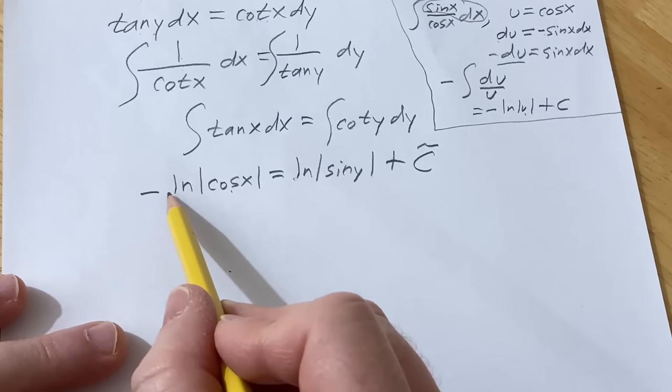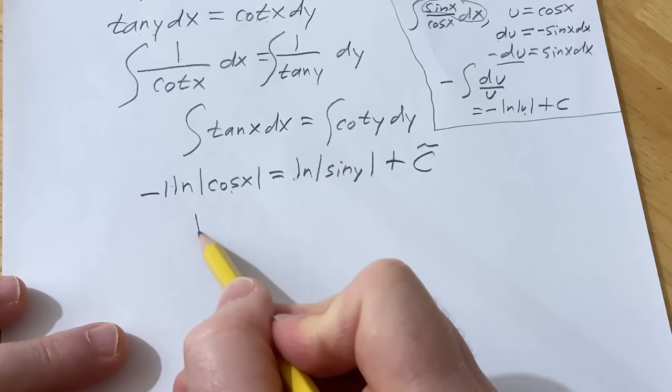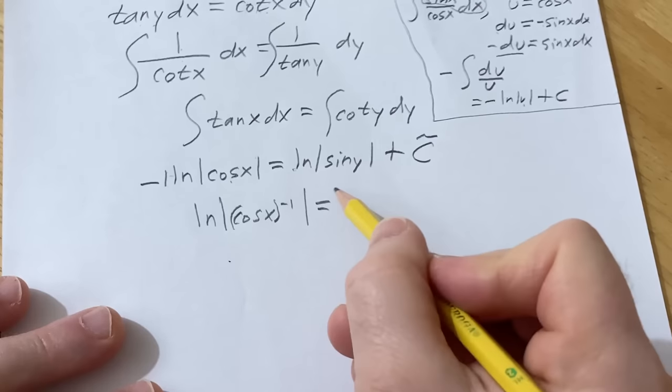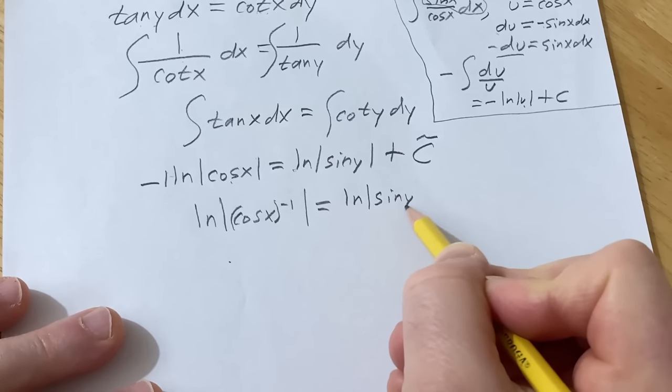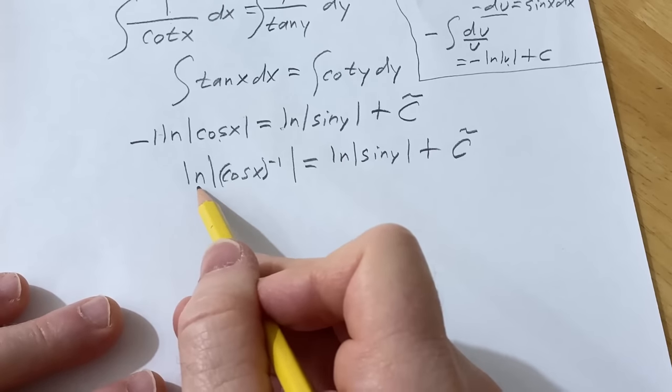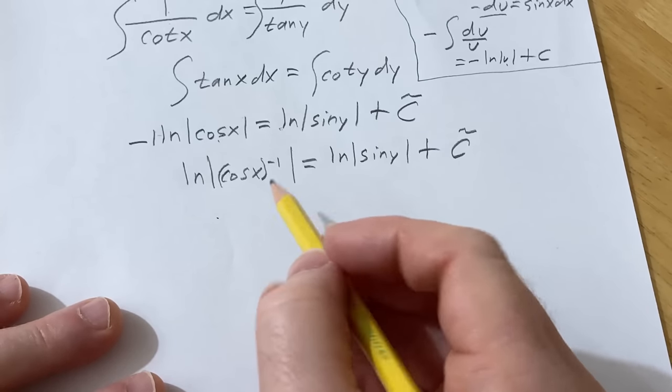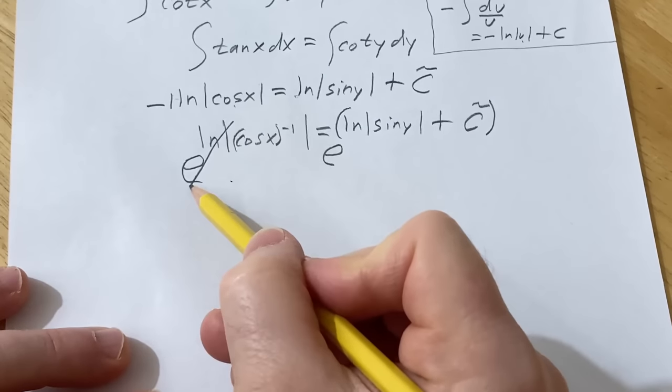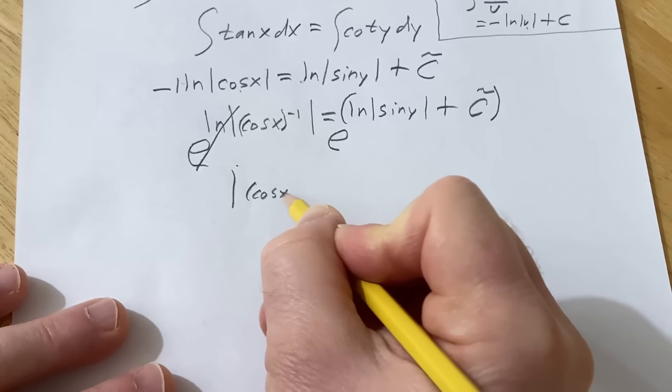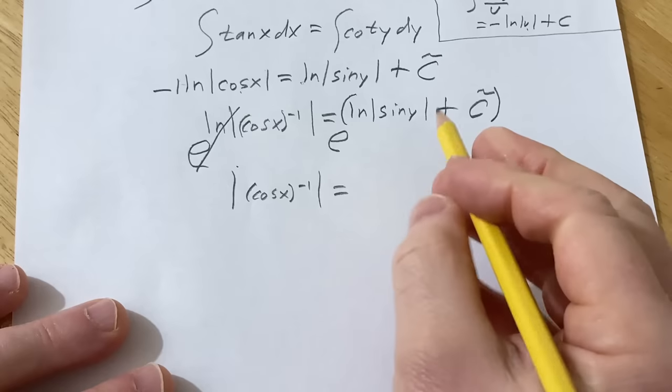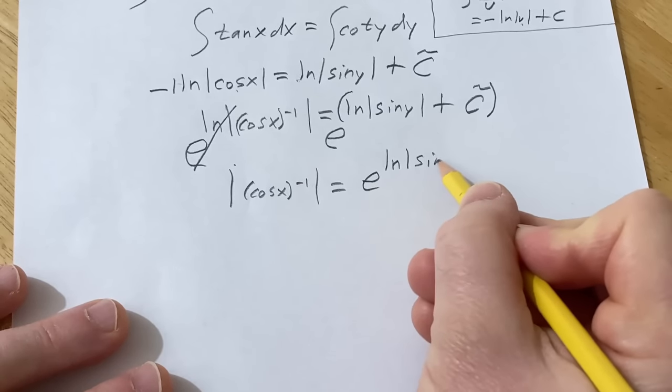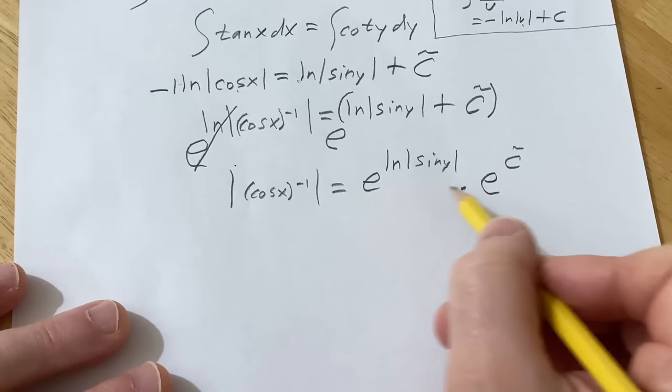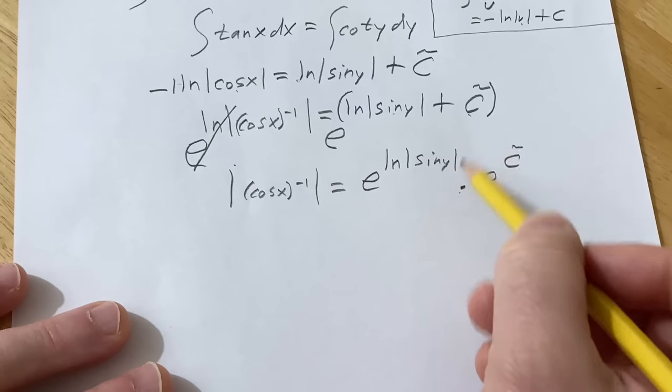All right, we want to get rid of the logs, but there's a negative one here. So let's bring it upstairs using the power rule for logs. So we get ln|cos(x) to the negative one| equals natural log|sin(y)| plus c tilde. To get rid of the natural logs, what we're going to do is we're going to exponentiate both sides. So I'm going to put an e here, I'm going to put an e here. This goes away. So we get the absolute value of cos(x) to the negative one. Here I'm going to show an extra step. This is e to the natural log|sin(y)| times, and then this is e to the c tilde. The reason there's multiplication here is because when you multiply things like this and the bases are the same, you just add the exponents. So this is a tricky step for people. Boom, goes away.